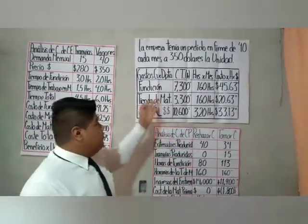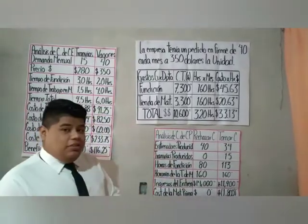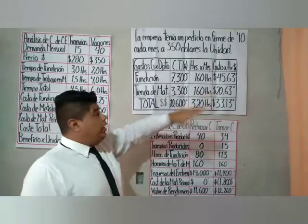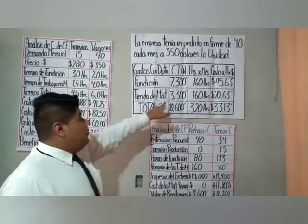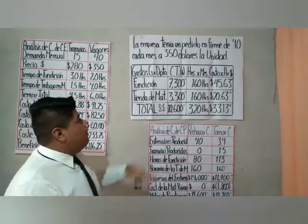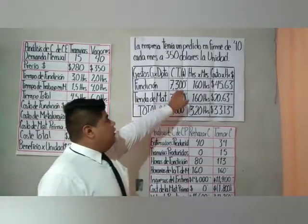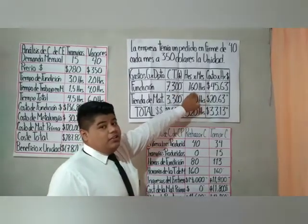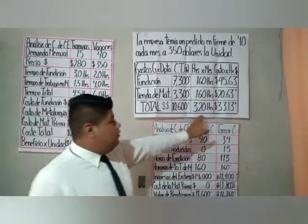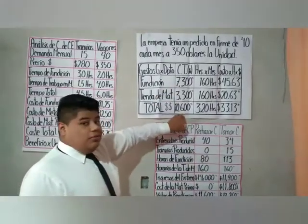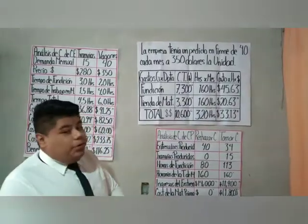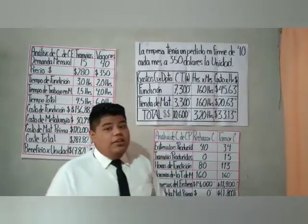Se presenta el análisis del costo por hora de la fundición de latón. La tabla incluye gastos generales por departamento, costo total, horas disponibles por mes y costo por hora. En fundición: $7,300; en tienda de materiales: $3,300. El costo por hora se calcula con la fórmula costo total sobre horas disponibles por mes. Para fundición: $7,300 entre 160 horas disponibles. En total, la suma del costo total es $10,600 con 320 horas disponibles, dando un costo por hora de $33.13 dólares por hora.